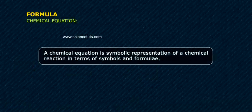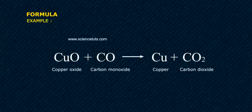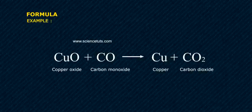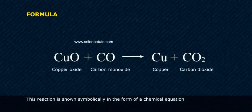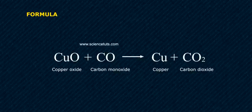A chemical equation is a symbolic representation of a chemical reaction in terms of symbols and formulae. Example: the reaction between copper oxide (CuO) and carbon monoxide (CO) gives copper (Cu) and carbon dioxide (CO2) as products. This reaction is shown symbolically in the form of a chemical equation: CuO + CO → Cu + CO2.